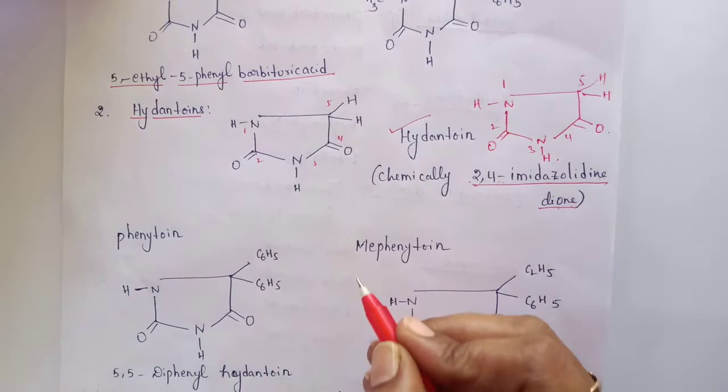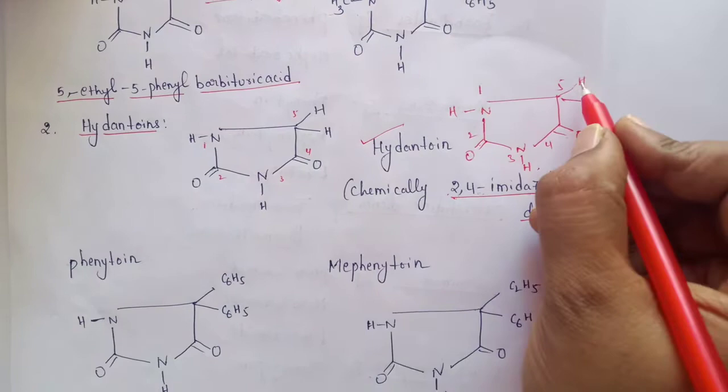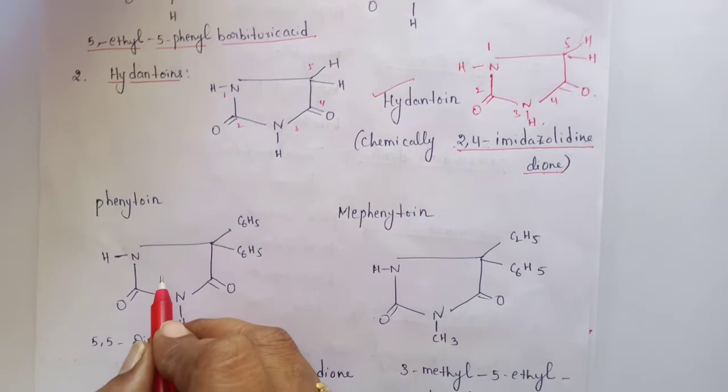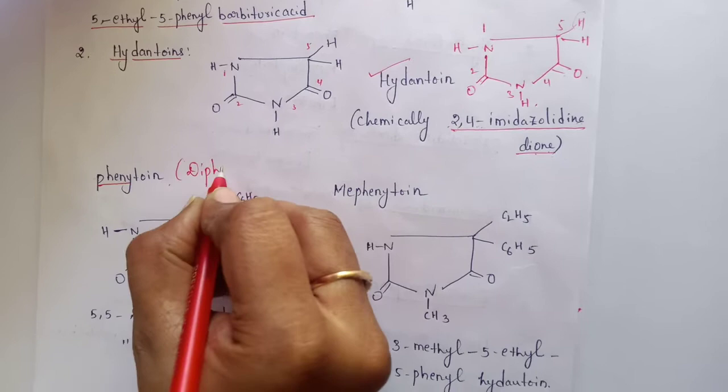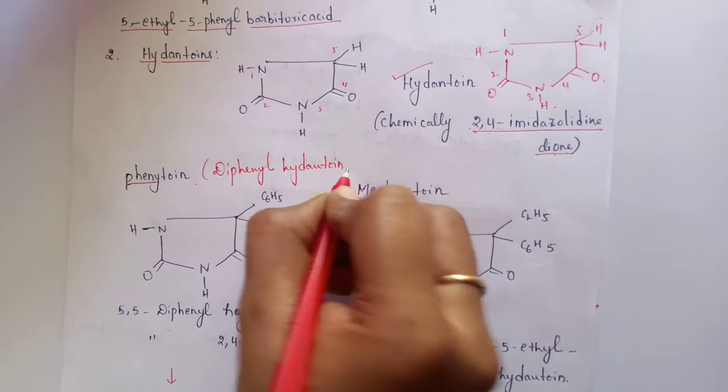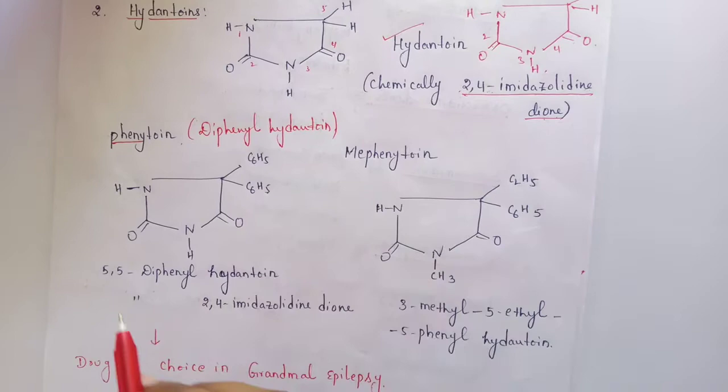In hydantoin derivatives, similar to barbiturates, different functional groups are substituted at the fifth position. In the case of phenytoin, a phenyl group is substituted at the fifth position, and it consists of two phenyl rings. Therefore, phenytoin is well known as diphenylhydantoin. At the fifth position, both hydrogens are substituted with phenyl rings — it is known as 5,5-diphenylhydantoin.